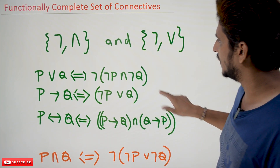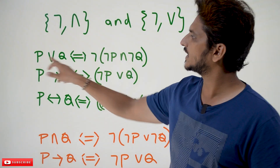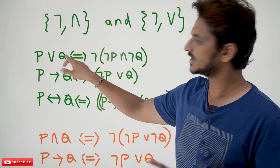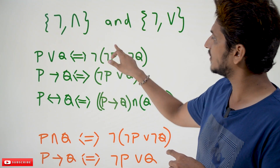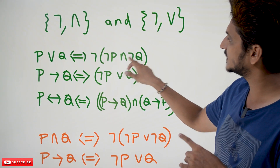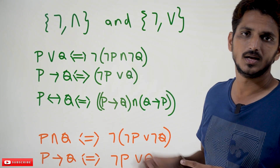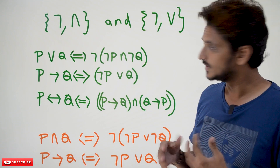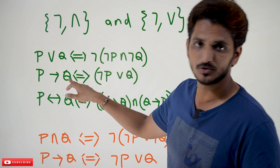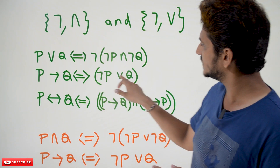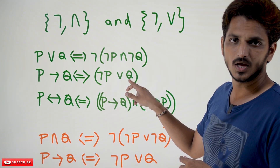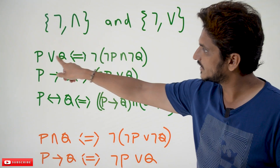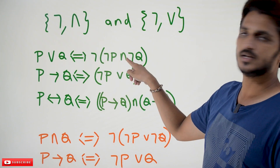Let's understand with an example. If you take P disjunction Q, it can be written as negation of (negation P conjunction negation Q). This is from De Morgan's law. Similarly, if you take P implies Q, it can be written as negation P disjunction Q. So you write it in the form of disjunction, and you can also write it in the form of conjunction.